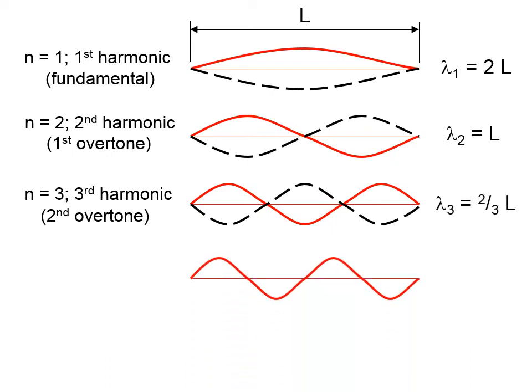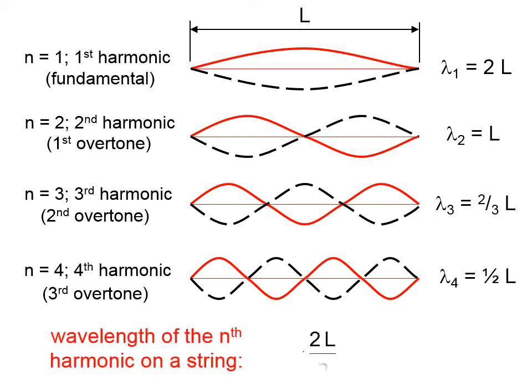And so on. Let's do one more. This is the fourth harmonic, also called the third overtone. So there's a general pattern for finding the wavelength of the n-th harmonic on a string. And here it is. Lambda sub n is equal to 2L divided by n.